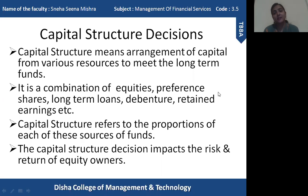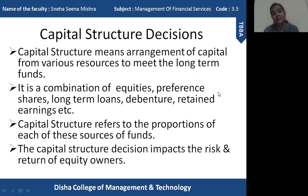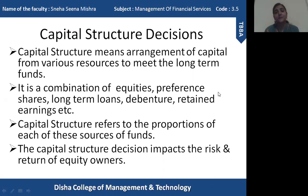There is another term — financial structure — which people often confuse with capital structure. The financial structure covers the entire organization and includes both long-term and short-term funds, meaning all sources through which both long-term and short-term funds are raised. Capital structure, however, is only about long-term sources of finance — the permanent finance of the organization. That is the basic difference between financial structure and capital structure.